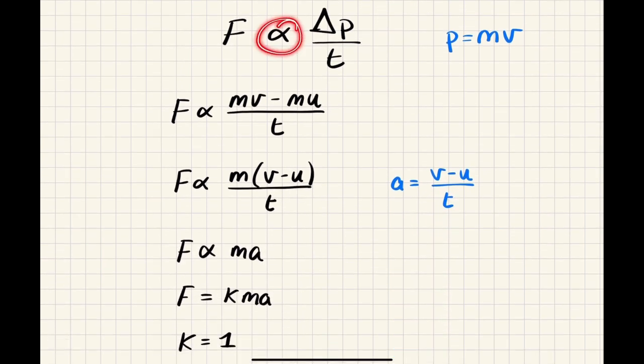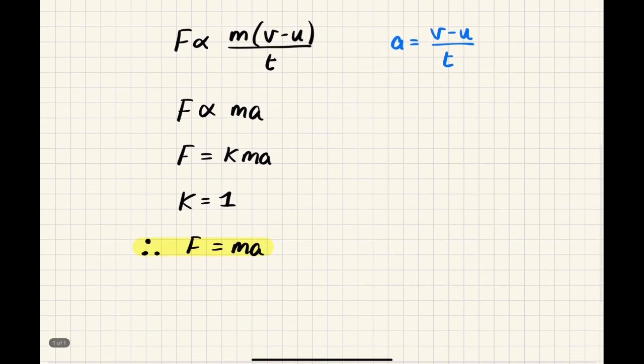Don't just drop this proportional symbol magically halfway through. Make sure to show them what you're replacing. Particularly, you must show them that acceleration is V minus U over T. And a big one that students sometimes leave out is that they don't mention any of this K business. They just skip from here to the end. And you do lose marks in a leaving cert for not having that. So make sure to have each step along the way.